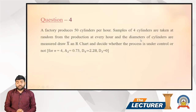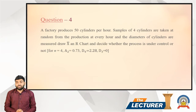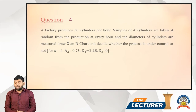A factory produces 50 cylinders per hour. Samples of 4 cylinders are taken at random from the production at every hour and the diameters of the cylinders are measured. Draw the X-bar and R chart and decide whether the process is under control or not.